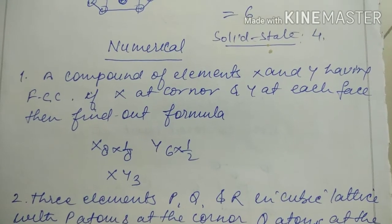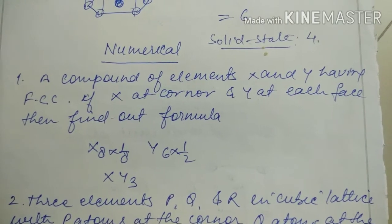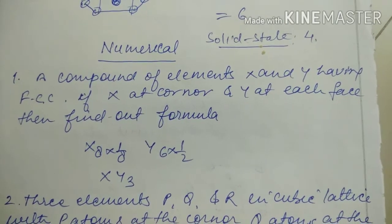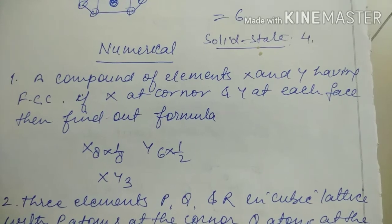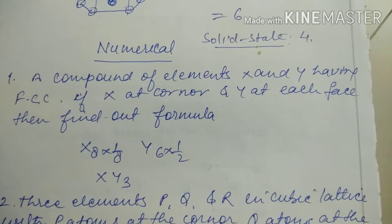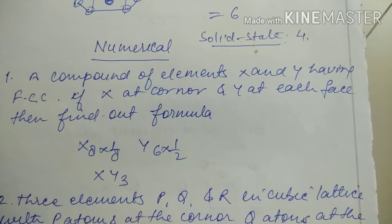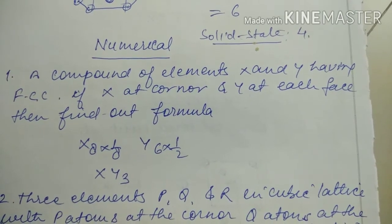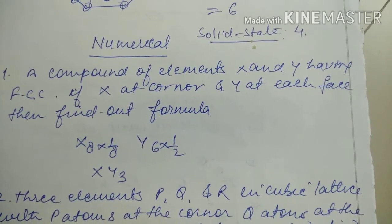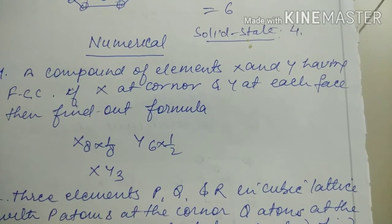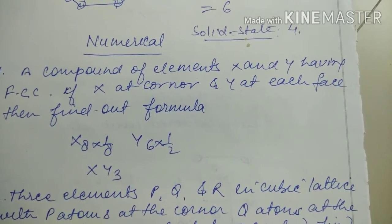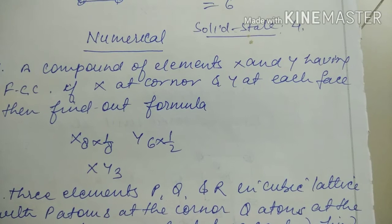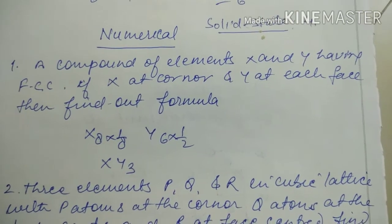X is at corners, so X subscript is 8 times 1/8, and Y is face-centered, meaning 6 times 1/2. X is 8 times 1/8, that's 1. Y is FCC, so it's 6 times 1/2, which is 3. So the formula becomes XY3.